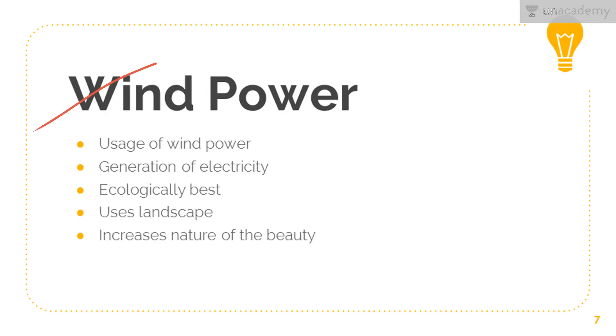So, wind power. What is wind power basically? Wind power is the power generated by the flowing or movement of the wind. Usage of wind for generating electricity or other well-known purposes is known as wind power. It helps with the generation of electricity. It is ecologically the best design because it's the only power station which doesn't leave out any radiations or emissions. They use heavy landscape and require a set area for the wind power to be set up. They increase the beauty of nature. By the windmill, you can see the nature looks very beautiful.